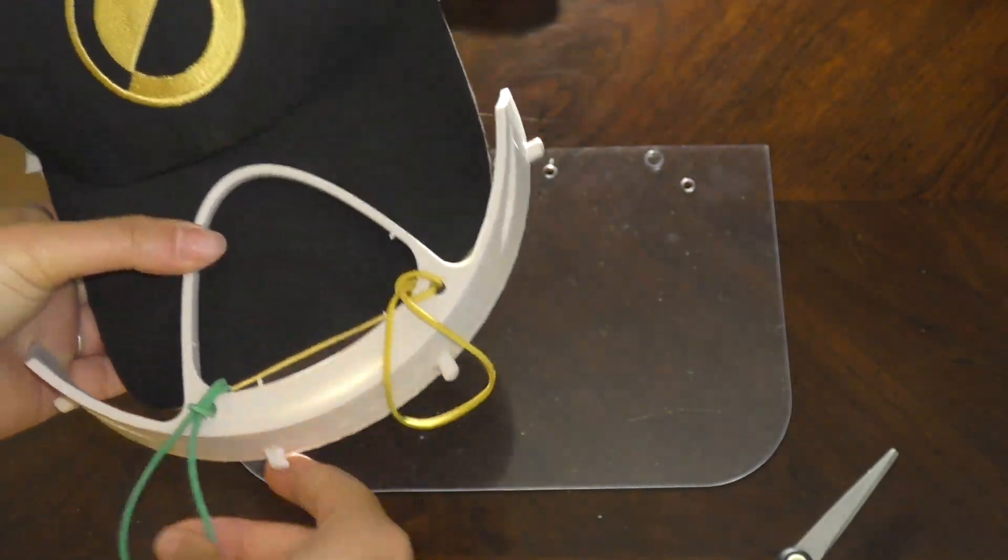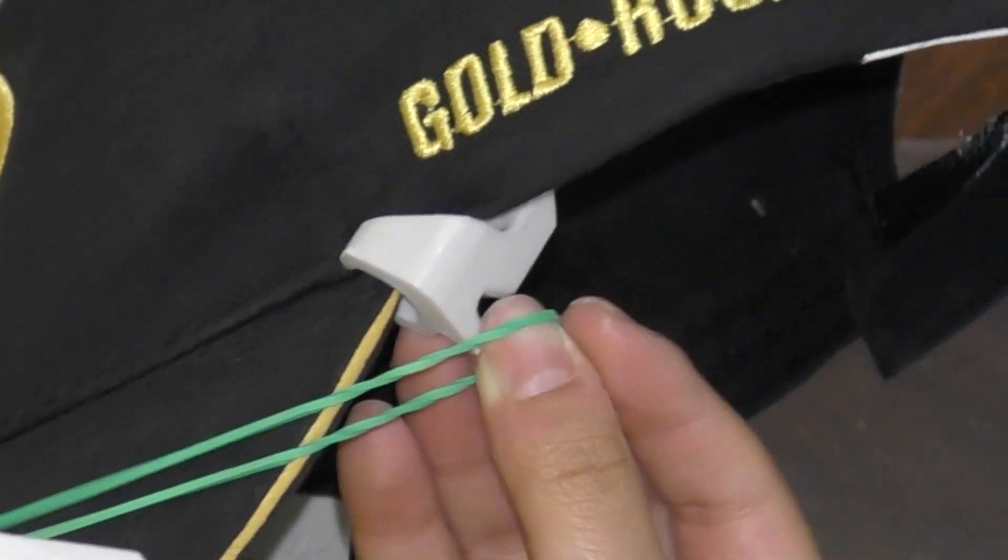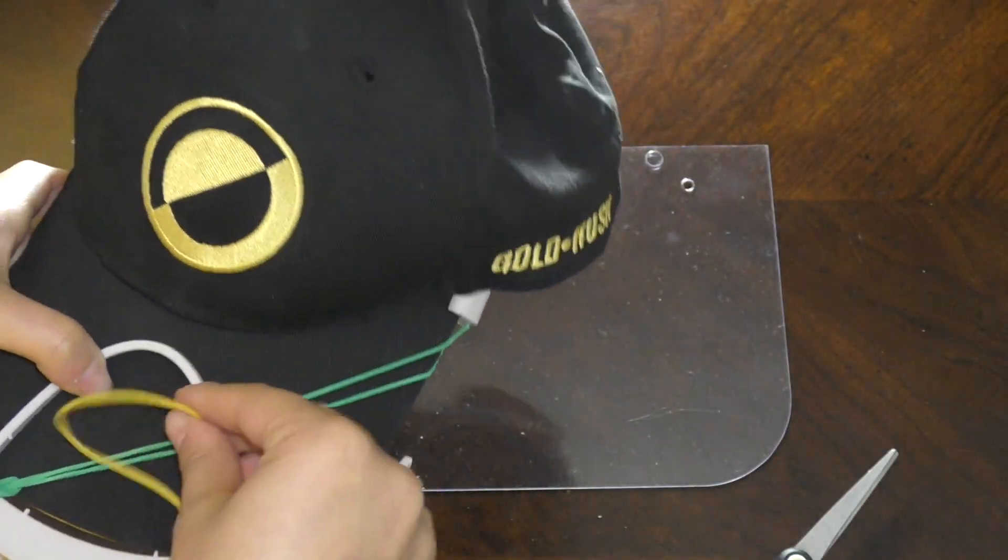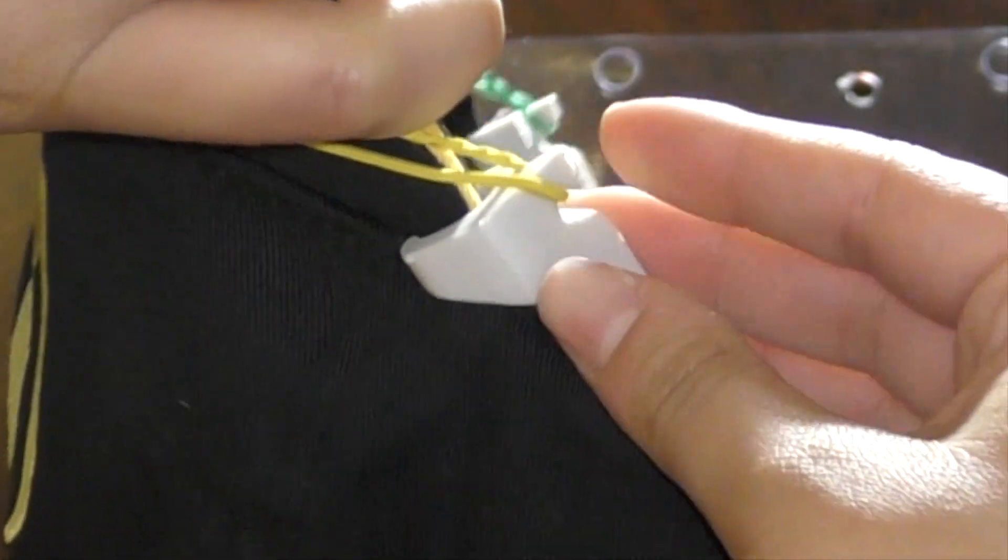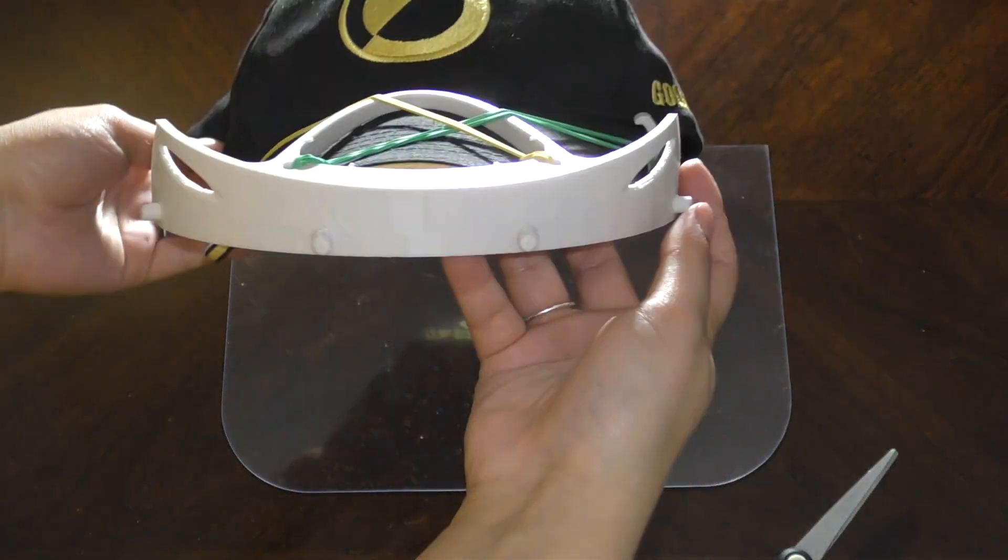Then take each elastic band and diagonally cross the top of the hat to hook it onto the clip that we have placed earlier. Do this to each side. This will secure our attachment to the hat.